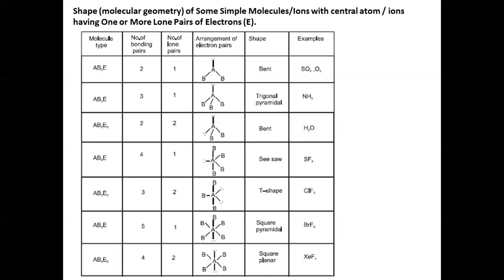Shapes of molecules with lone pairs: AB₂E — bent shape, e.g., SO₂ and O₃. AB₃E — trigonal pyramidal, e.g., NH₃. AB₂E₂ — bent or inverted V shape, e.g., H₂O. AB₄E — seesaw shape, e.g., SF₄. AB₃E₂ — T-shaped, e.g., ClF₃. AB₅E — square pyramidal, e.g., BrF₅. AB₄E₂ — square planar, e.g., XeF₄.